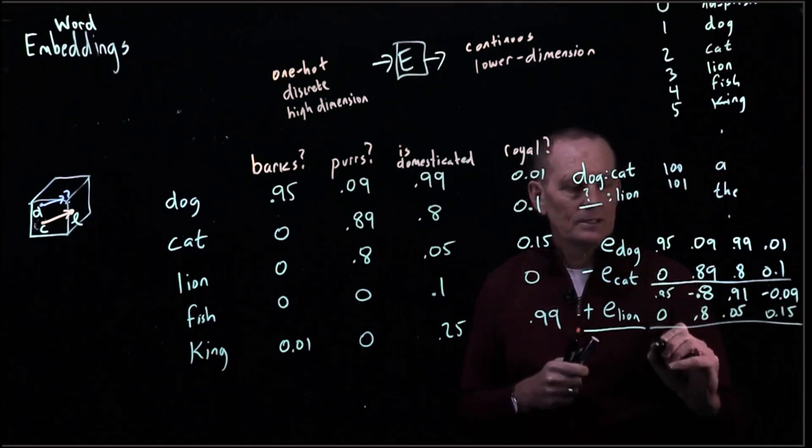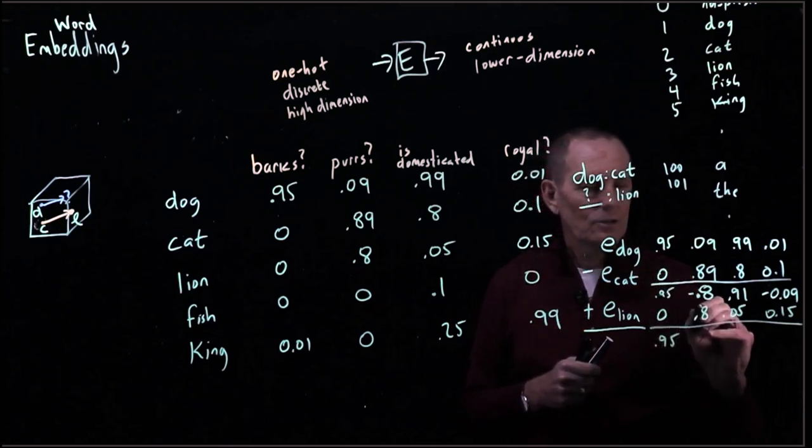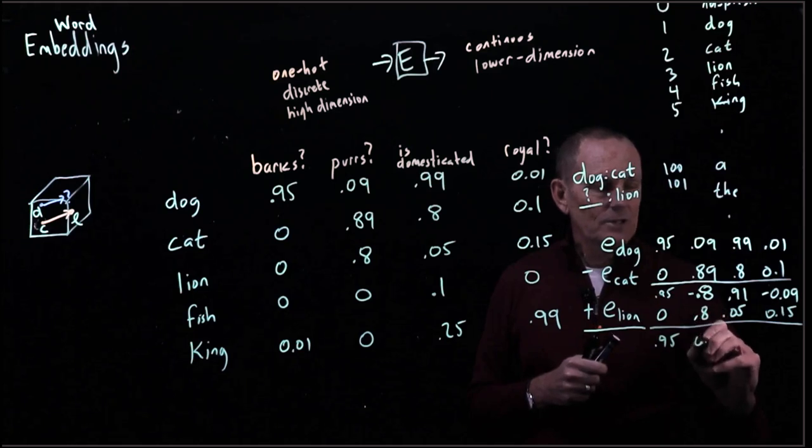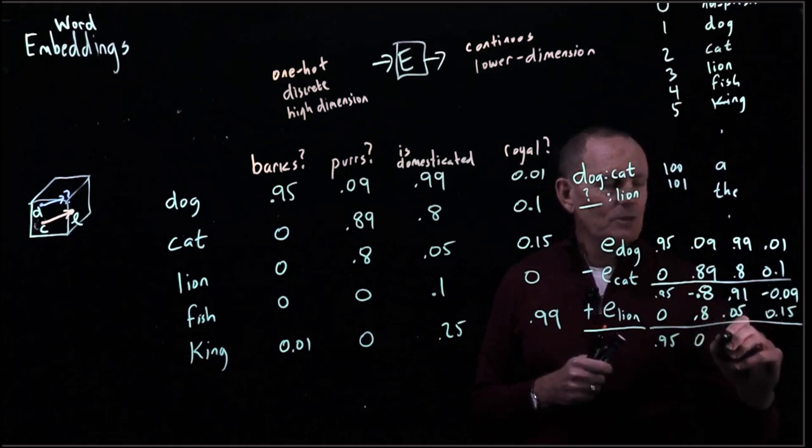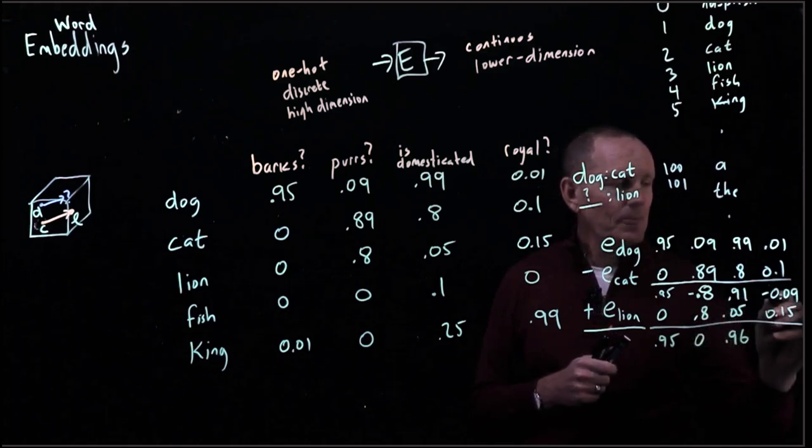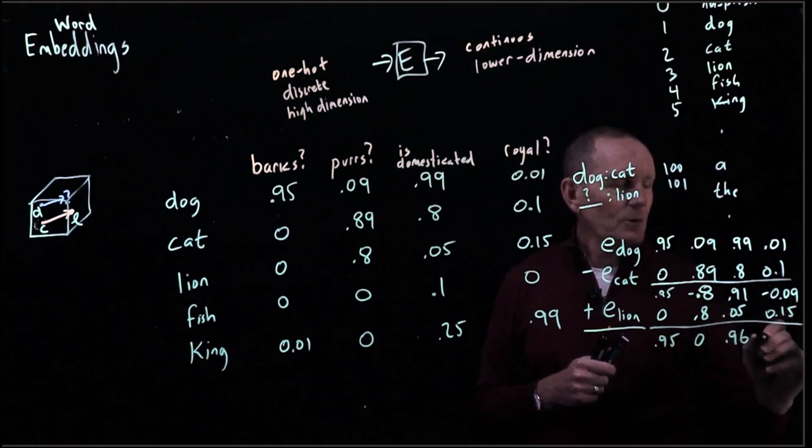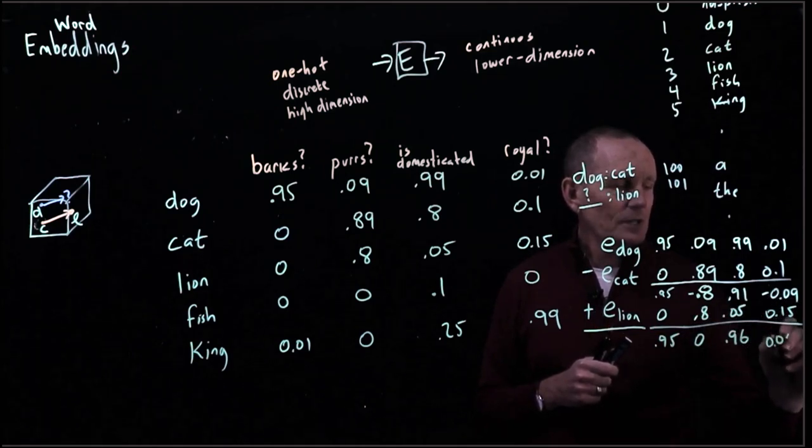So this is minus, this is a plus, this is 0.95. Negative 0.8 plus positive 0.8 is zero. 0.91 plus 0.05 is 0.96. And negative 0.09 plus 0.15 is 0.06.